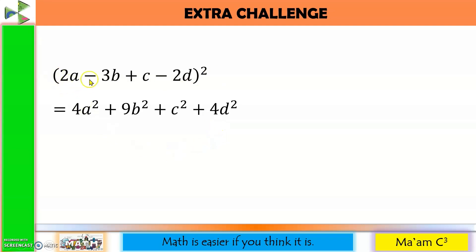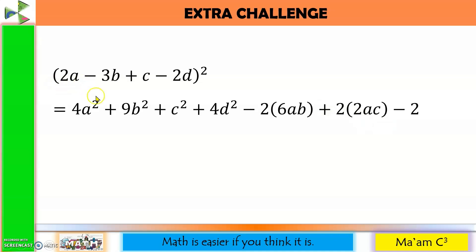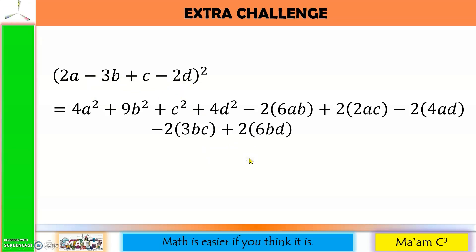Let's get the pairs. Positive times negative is negative, so we have negative 2 times 2a times 3b is 6ab. Next pair: positive times positive is positive, so positive 2 times 2a times c is 2ac. Next pair: positive times negative is negative, so negative 2 times 2a times 2d is 4ad. Next pair: negative times positive is negative, so negative 2 times 3b times c is 3bc. Next pair: negative times negative is positive, so positive 2 times 3b times 2d is 6bd. Last pair: positive times negative is negative, so negative 2 times c times 2d is 2cd.